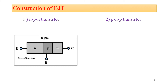The doping level is very important for the construction of transistors, whether NPN or PNP. Your emitter is always heavily doped, while your base is always lightly doped, and the collector is always moderately doped.